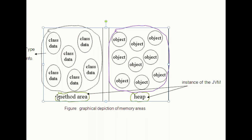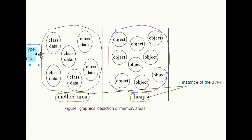What is the method area? When the JVM loads your class files, it parses information about a type from the binary data contained in the class file. It places this type information into the method area. When the JVM runs your Java program, it places the objects the program instantiates into the heap memory.